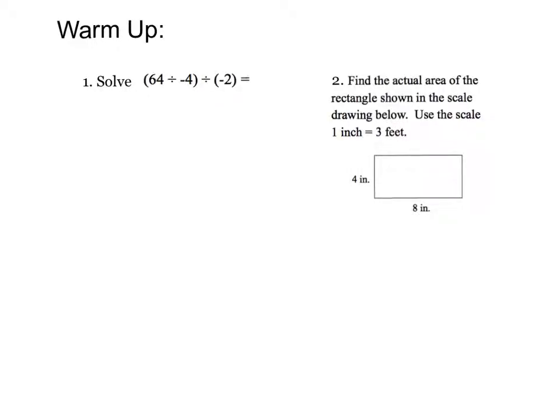Our first problem today is to solve 64 divided by negative 4 divided by negative 2. Remember, we have to follow order of operations and start with whatever is in our parentheses. So 64 divided by negative 4 is negative 16, divided by negative 2. A negative over a negative is positive, and 16 divided by 2 is 8. That's our answer.